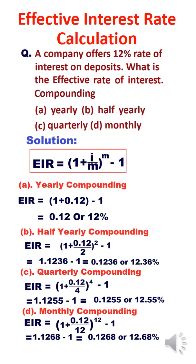If you see the answer here: if it is annual compounding, the answer will remain 12%. But if it is half yearly compounding, the frequency we are taking is 2, because it will occur twice in the year. Therefore, the answer will be 12.36%.